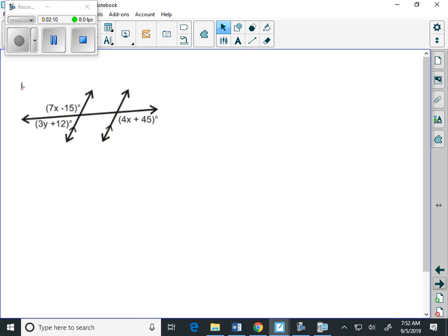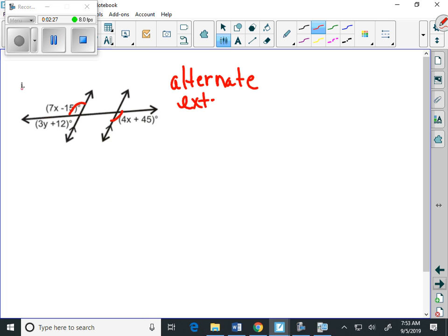Again, identify the different types of angles, and as I look at this one, what we see there is that these are alternate exterior angles. And what we know about alternate exterior angles are that they are equal. So we can say it's 7x minus 15, and we can set it up equal to 4x plus 45, and solve it the way your algebra 1 teacher taught you.